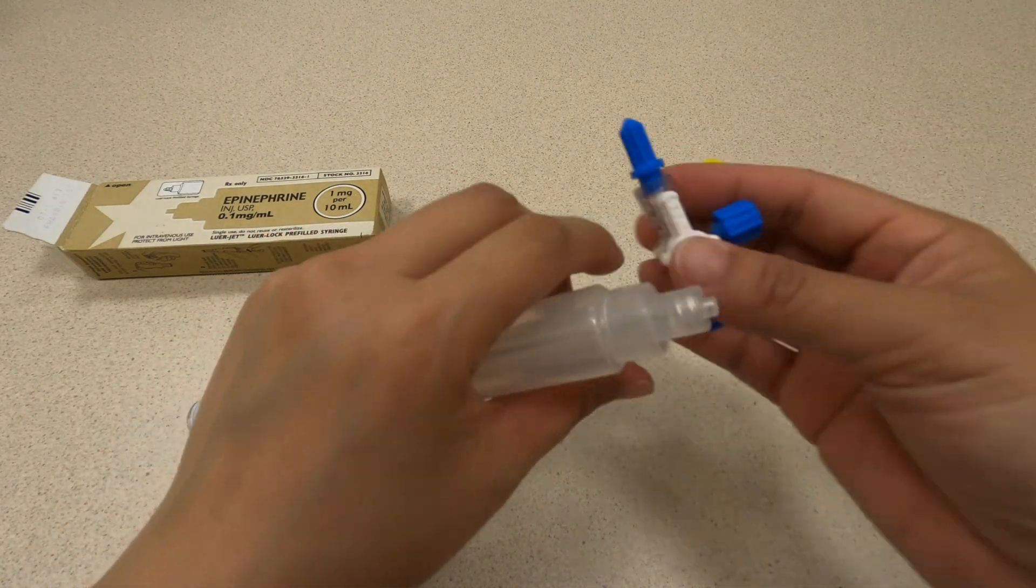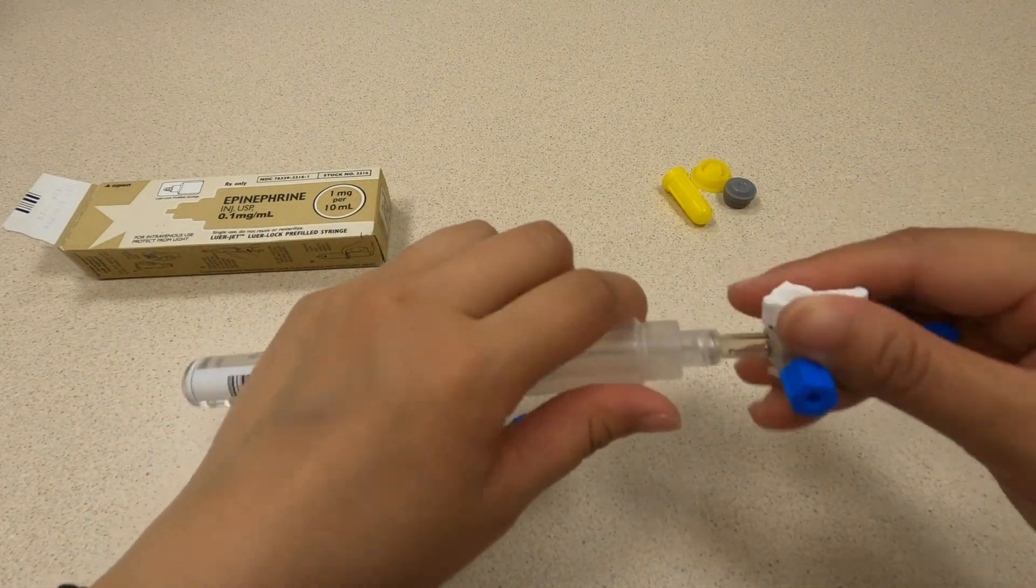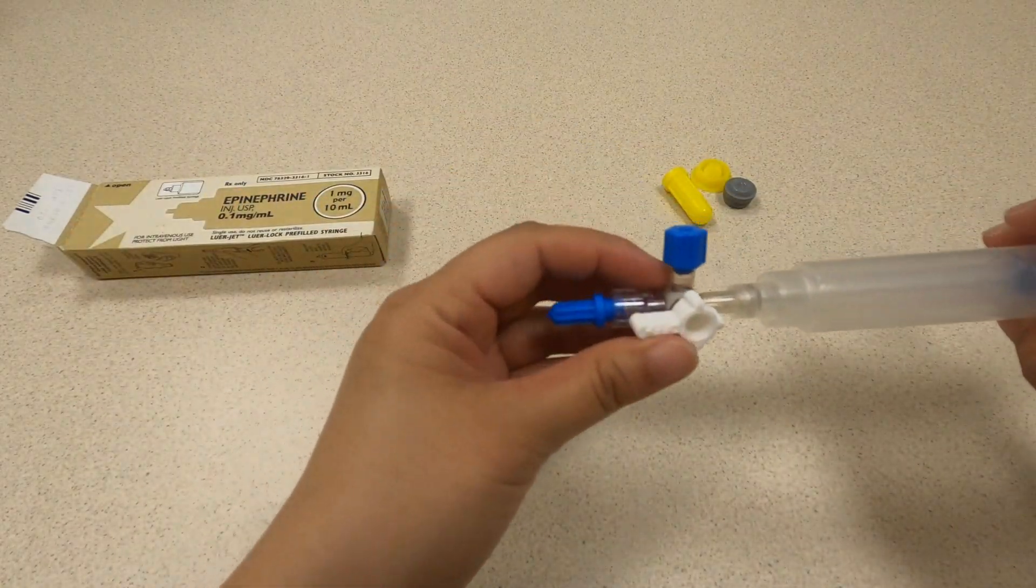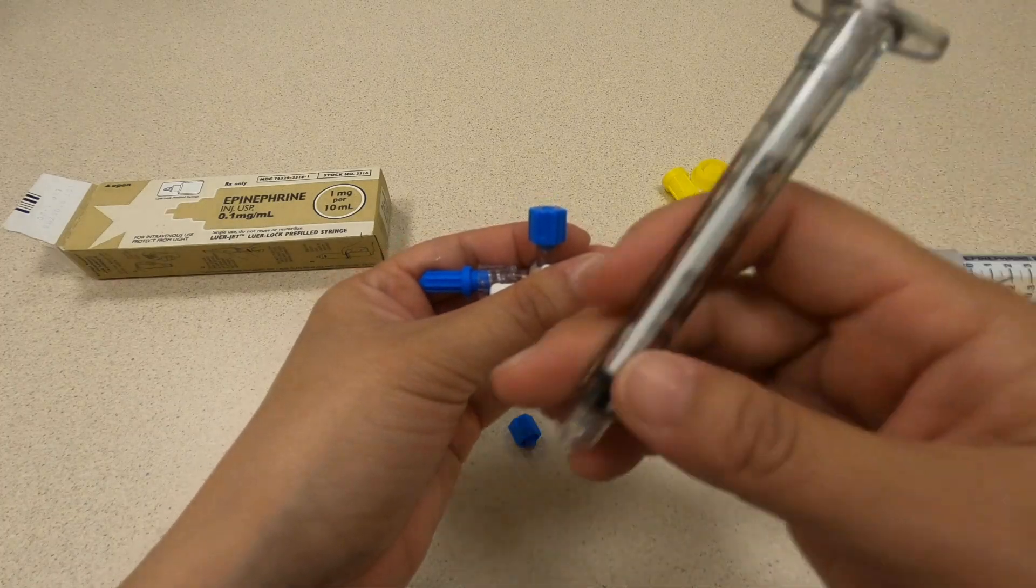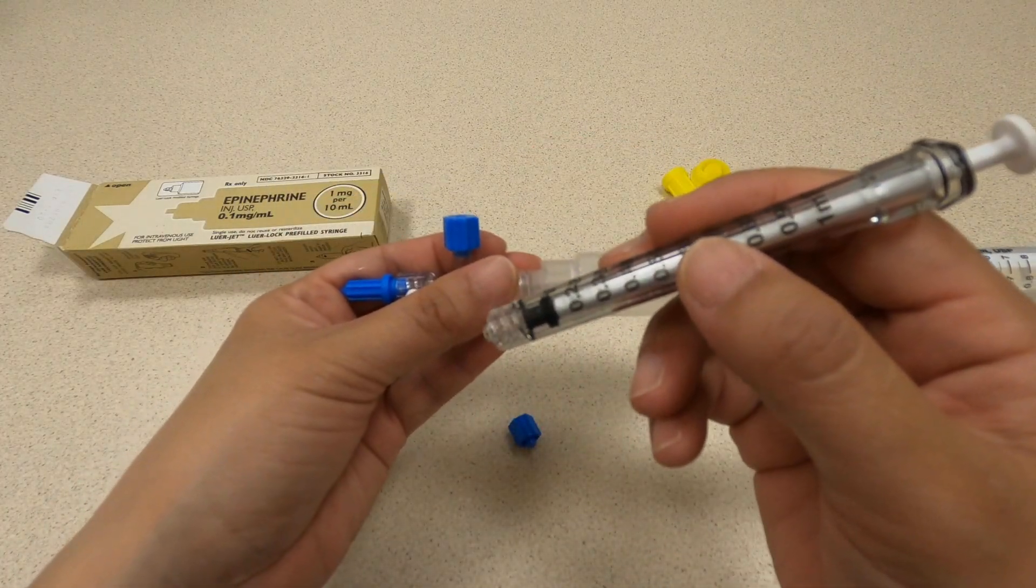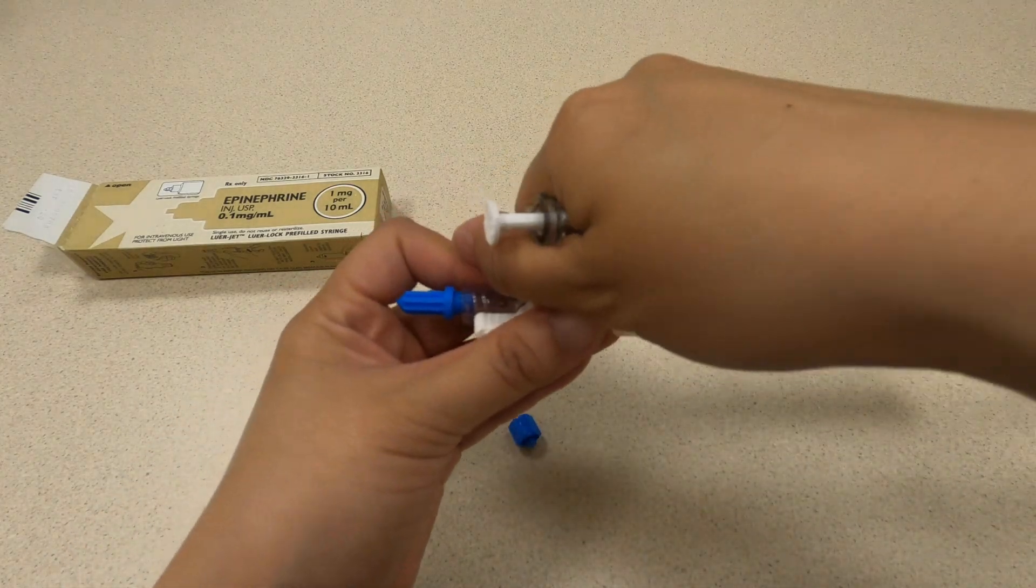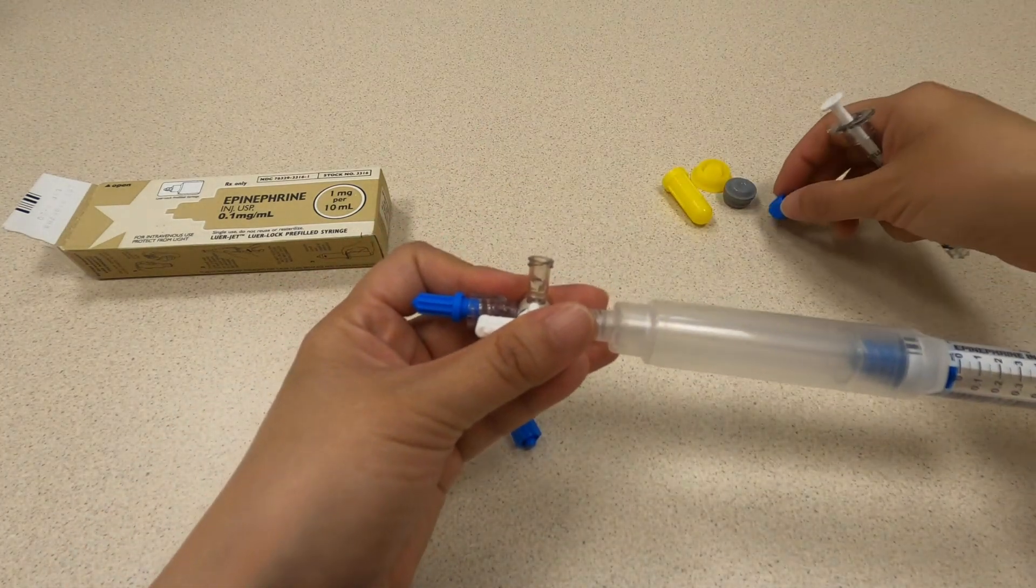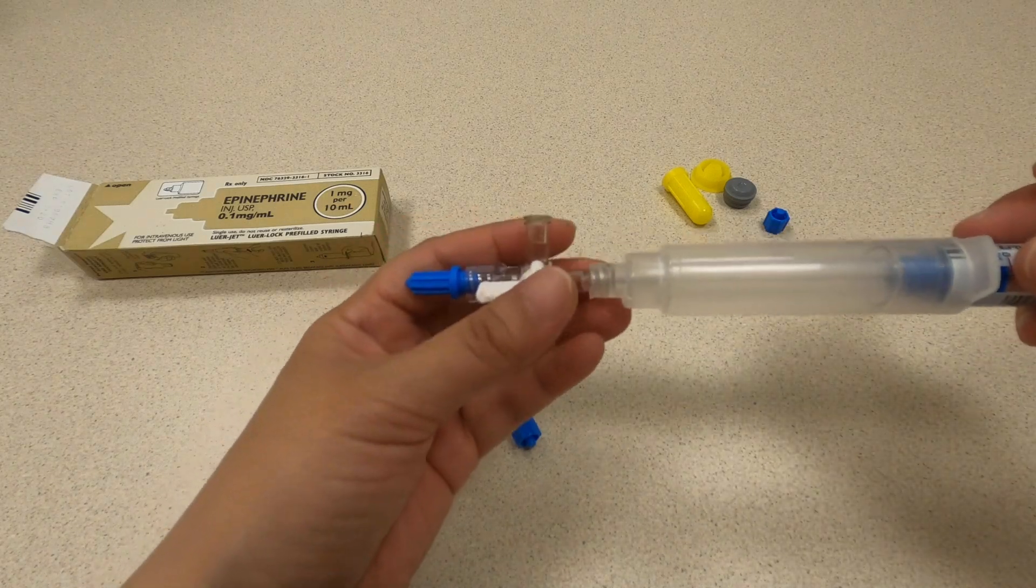The next step is to attach it to your stopcock. If you are drawing up a dose for a child less than 10 kilos, you're going to use your 1 milliliter syringe. If you're drawing up for a patient greater than 10 kilos, then you would use a three milliliter syringe. We'll use a one milliliter syringe. Let's use the same example of a nine kilogram child that needs a 0.9 milliliter dose.